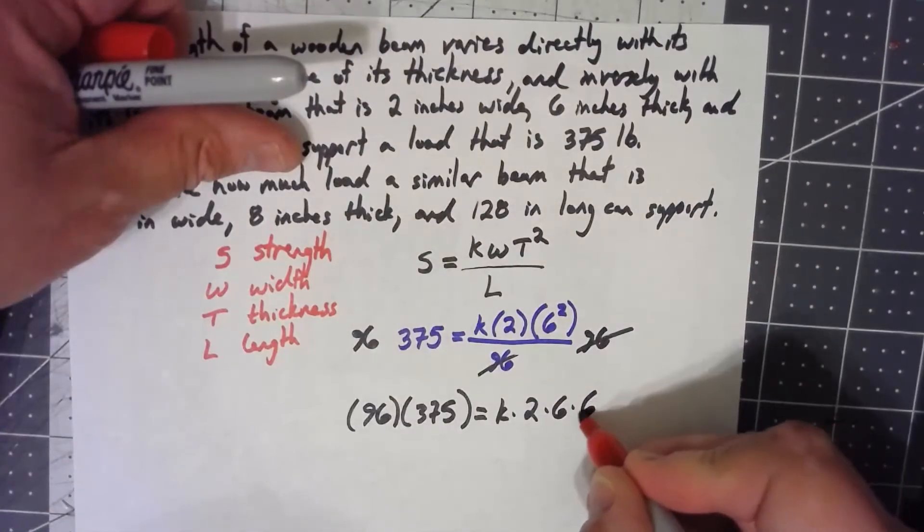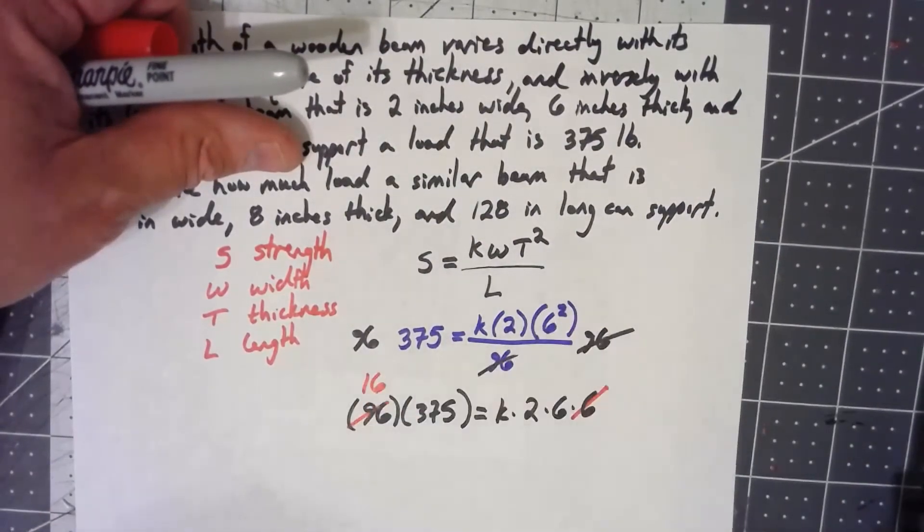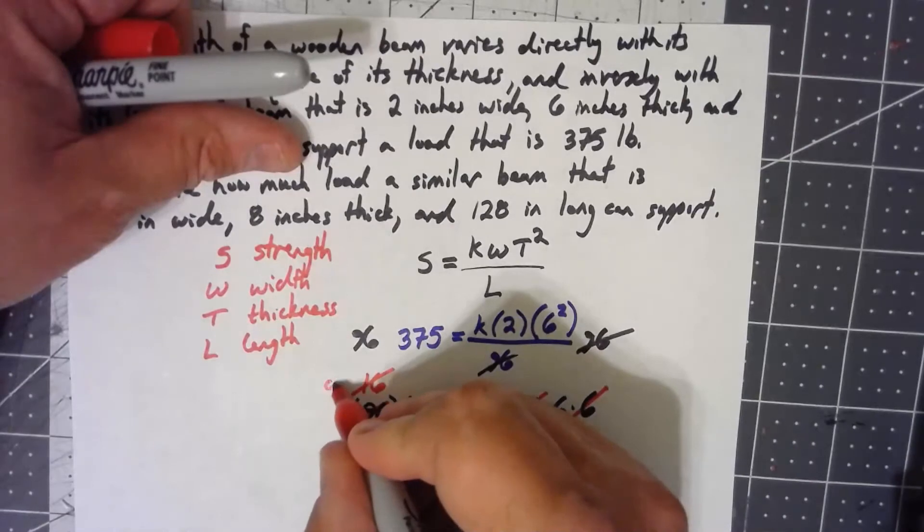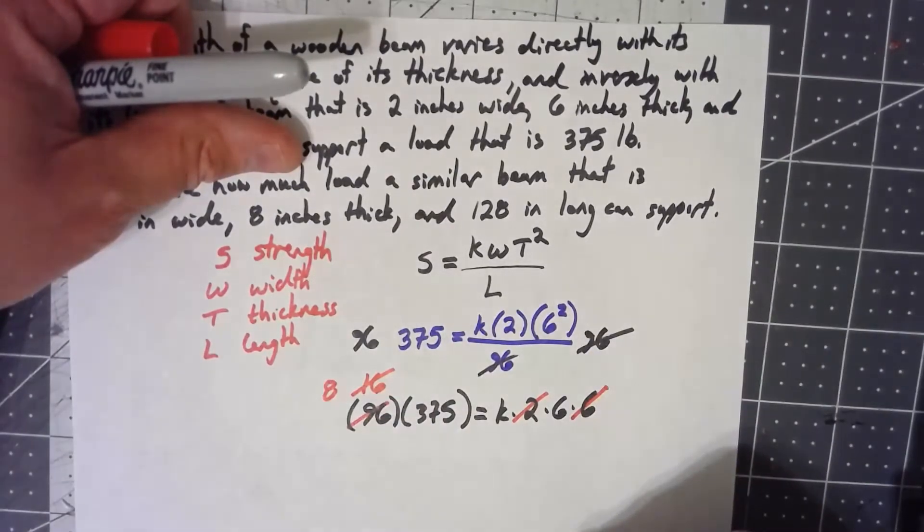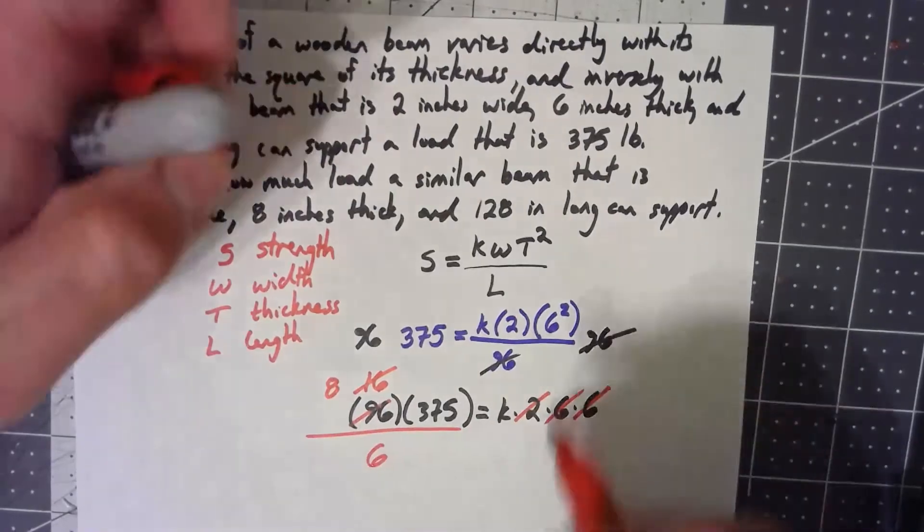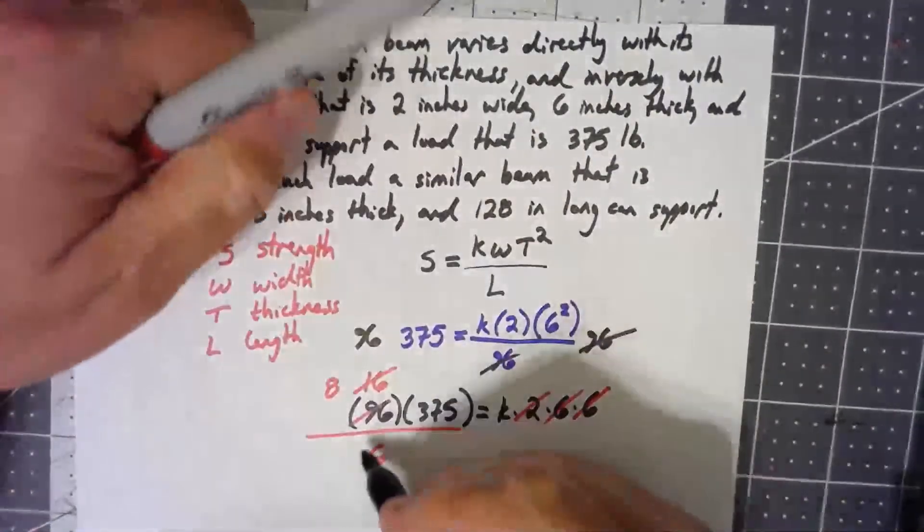See, if I divide both sides by 6, 96 divided by 6 is 16. I can divide both sides by 2, that would make that an 8. Then I can divide by 6 again, but that's a little uglier.